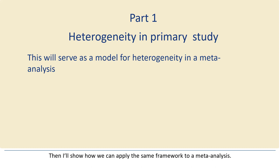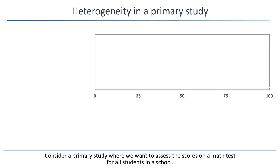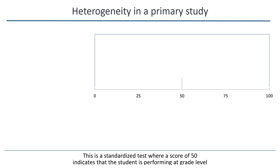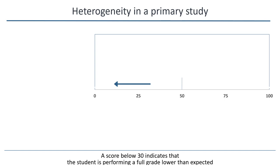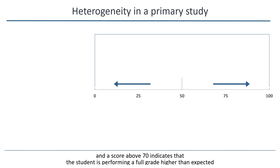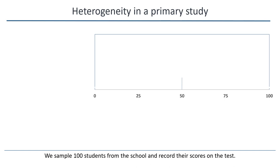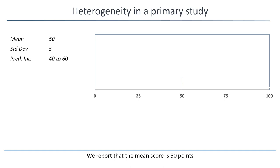Consider a primary study where we want to assess the scores on a math test for all students in a school. This is a standardized test where a score of 50 indicates that the student is performing at grade level. A score below 30 indicates that the students are performing a full grade lower than expected, and a score above 70 indicates that the student is performing a full grade higher than expected. We sample 100 students from the school and record their scores on the test. We report that the mean score is 50 points. We also report the standard deviation of these scores.